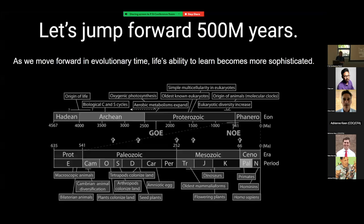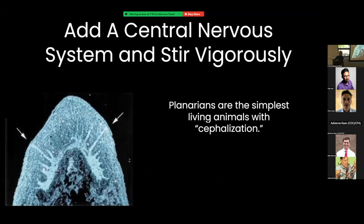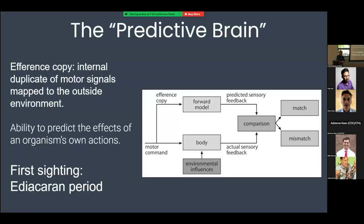Jumping forward in evolutionary time, our ability to learn gets more sophisticated. Let's add a central nervous system — about 500 million years later. The planaria is the simplest living animal with cephalization. When you add a central nervous system, you get something very interesting: a new capability called the predictive brain. You get the ability to create what's called an efference copy.